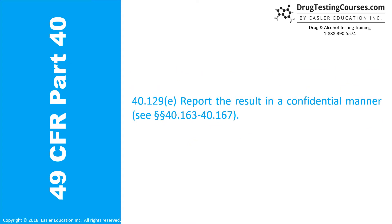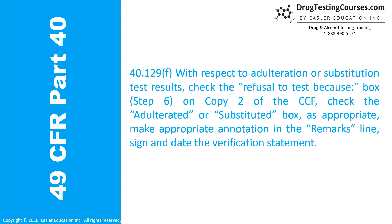40.129(e): Report the result in a confidential manner. See Sections 40.163 through 40.167. 40.129(f): With respect to adulterated or substituted test results, check the refusal to test because box in Step 6 on Copy 2 of the CCF, check the adulterated or substituted box as appropriate, make an appropriate annotation in the remarks line, and sign and date the verification statement.